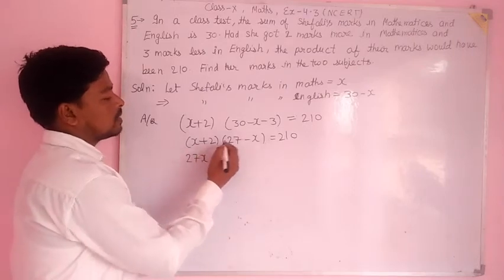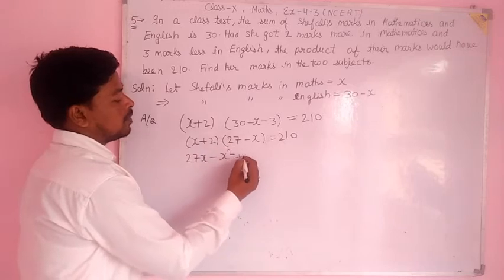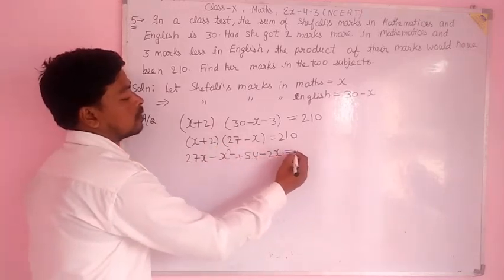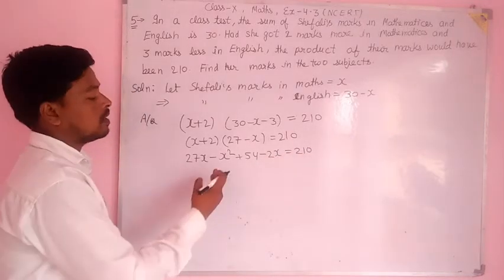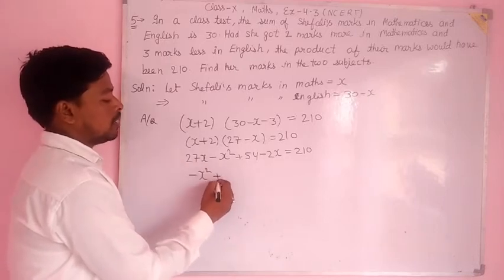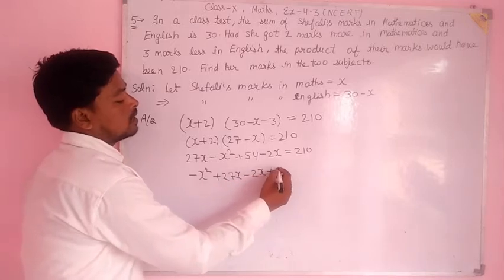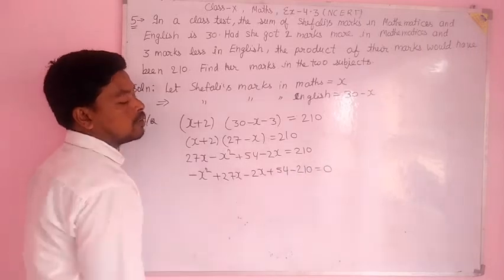So the equation becomes X minus X squared plus 54 minus 2X equal to 210. Converting the quadratic equation to general form: minus X squared plus 27X minus 2X plus 54 minus 210 equal to 0.